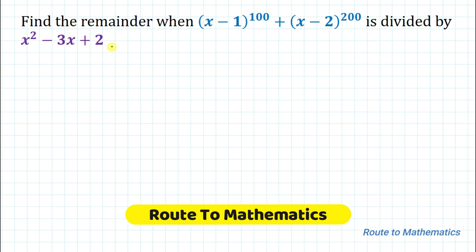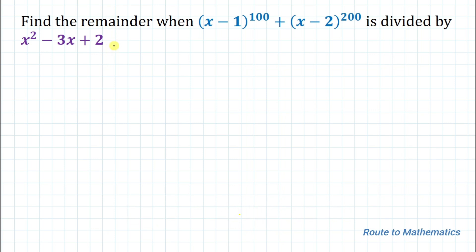Hello everyone, welcome to Root 2 Mathematics. In this video we have an interesting Olympiad question from the chapter polynomial. The given question is: find the remainder when (x minus 1) to the power 100 plus (x minus 2) to the power 200 is divided by x squared minus 3x plus 2. Without any delay, let's start solving this problem.